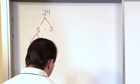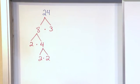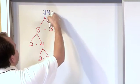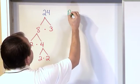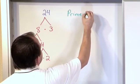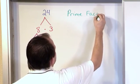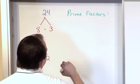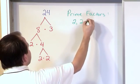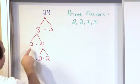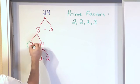And so what we want to do is write down the answer. And so since we were trying to find the prime factors of this guy, what we found is the prime factors of the number 24 is 2, 2, 2, and 3. So what you do is you list everything at the bottom of the tree.